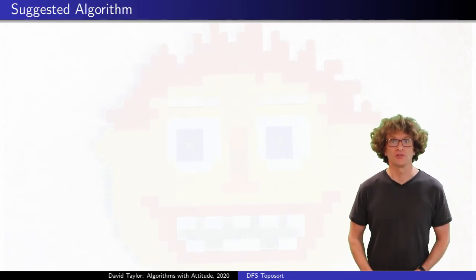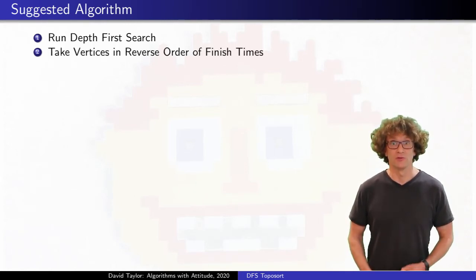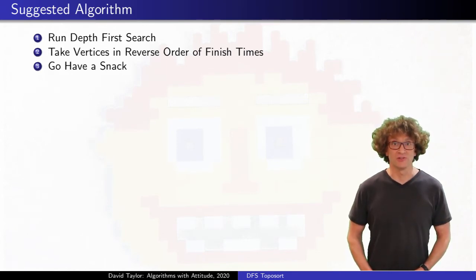It's super simple. Run depth first search on the entire graph, and set your topological order to be the reverse order of the vertex finish times. That's it. Because the graph is acyclic, when depth first search on a vertex completes, everything that vertex can reach has been explored. As long as the vertex is before those things in the ordering, it's set.